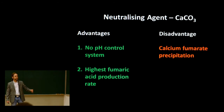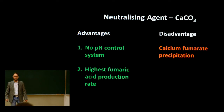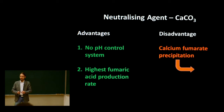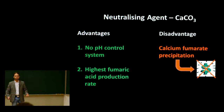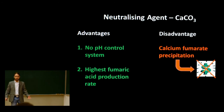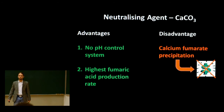One disadvantage of using calcium carbonate is the possible precipitation of calcium fumarate. Why is this a disadvantage? Well, if we form this solid, we have to extract the desired product from this solid in order to make profit, and so the overall cost will just increase, resulting in a lower profit. The currently accepted solubility of calcium fumarate in solution is 25 grams per liter.